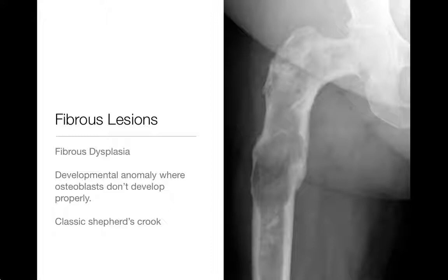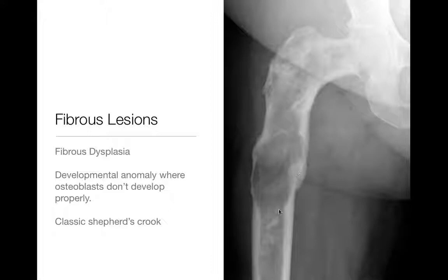The picture on the right here is the classic shepherd's crook deformity, which you get with longstanding fibrous dysplasia. The femur is bowed out and resembles the crook of a stereotypical ancient shepherd. You can see this geographic lesion with a ground glass appearance in places throughout the proximal femur. It has a narrow zone of transition — a typical appearance and location for fibrous dysplasia.